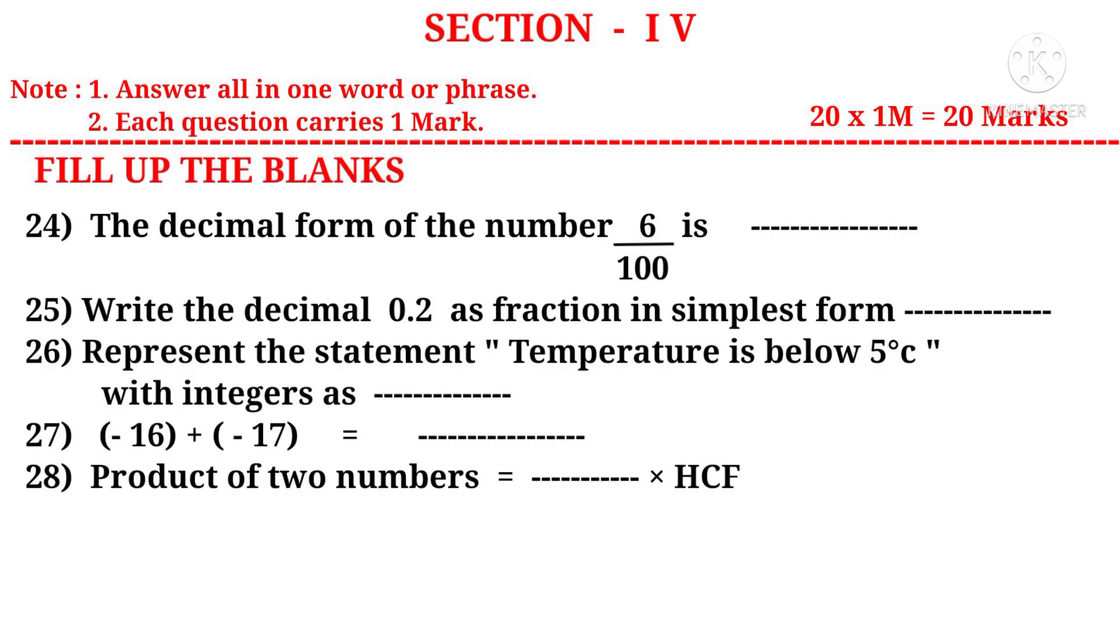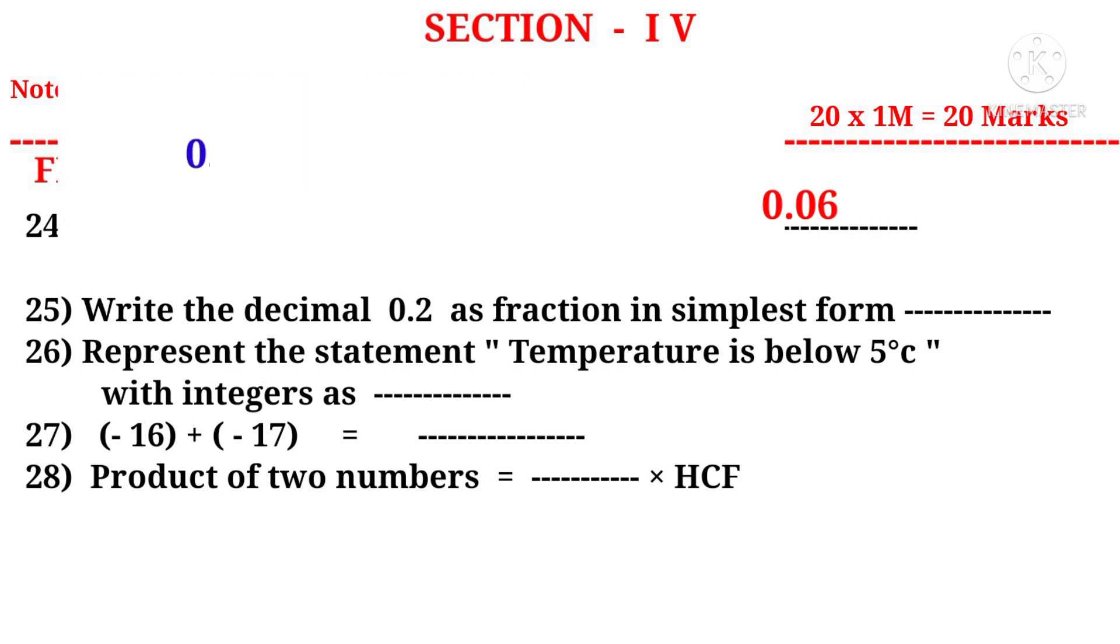Now let us answer the fill in the blanks. 24: The decimal form of the number 6 by 100 is. Observe that there are two zeros in the denominator. So we have to put the decimal point counting from right side to left side after 6. That is 0.06. Write the decimal 0.2 as a fraction in simplest form. 0.2 can be written as 2 by 10. On simplification by 2, 2 ones are, 2 fives are, that is equal to 1 by 5 is the answer.